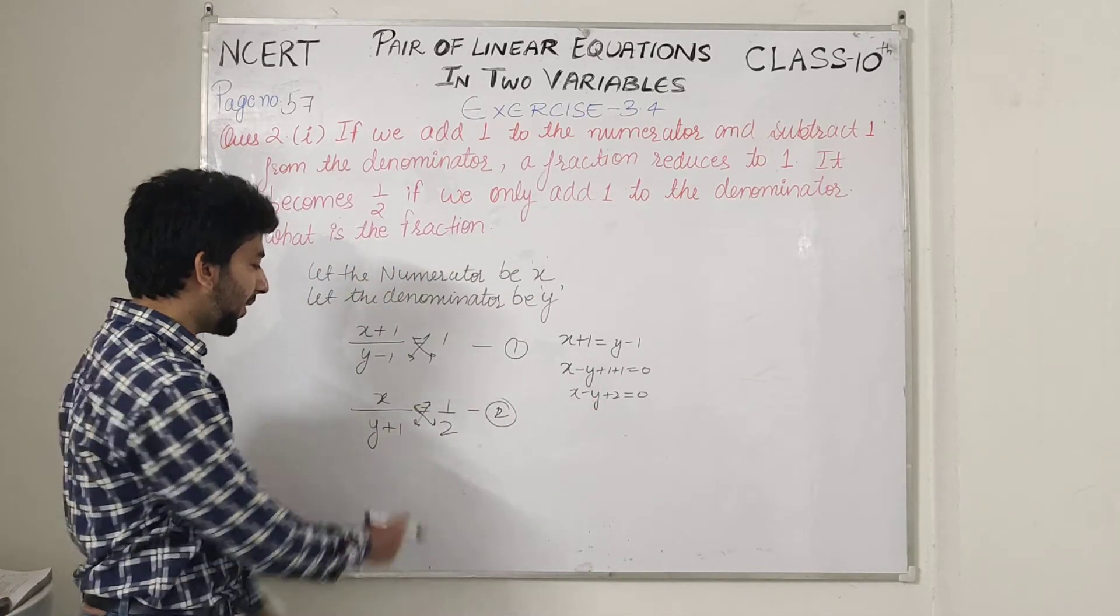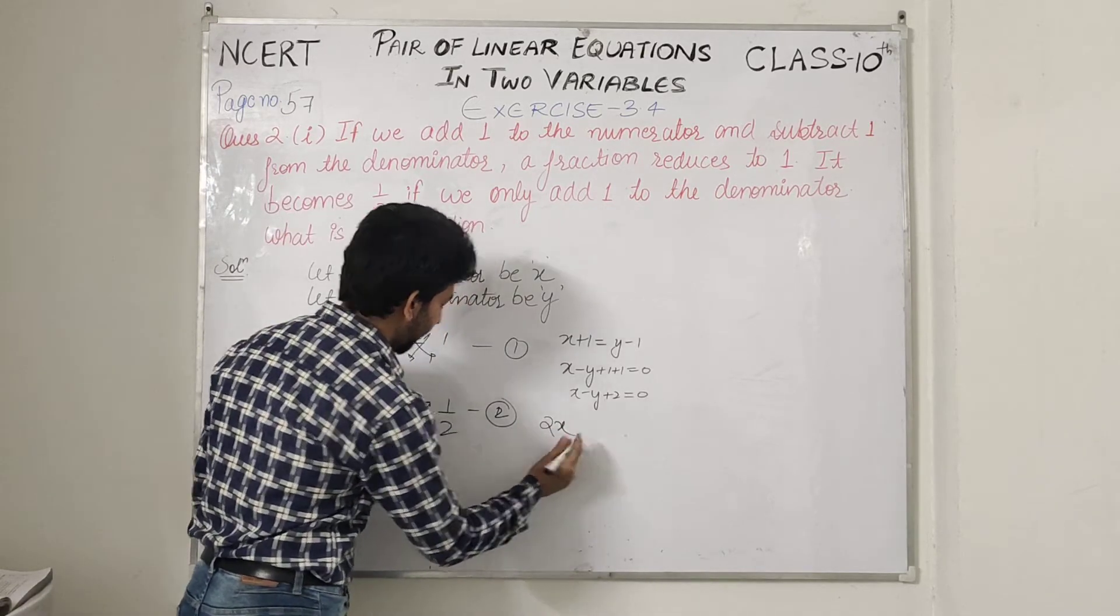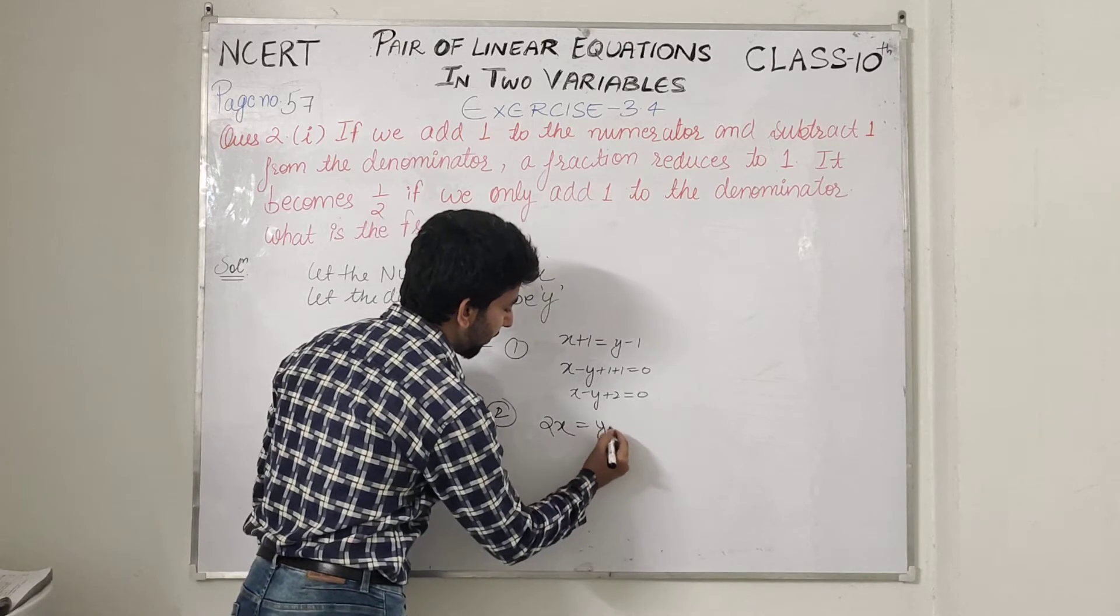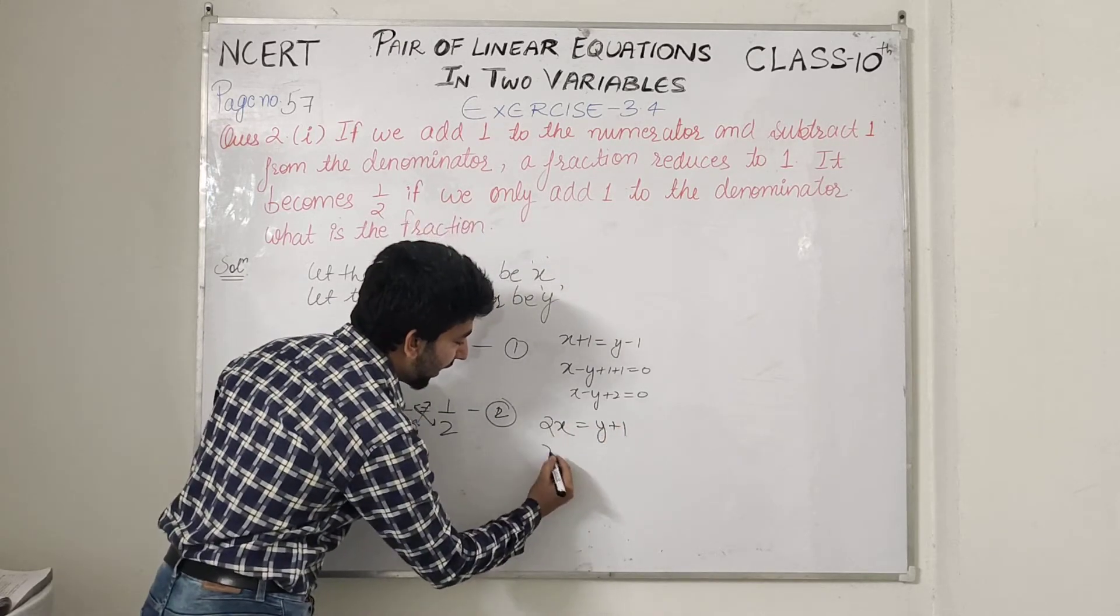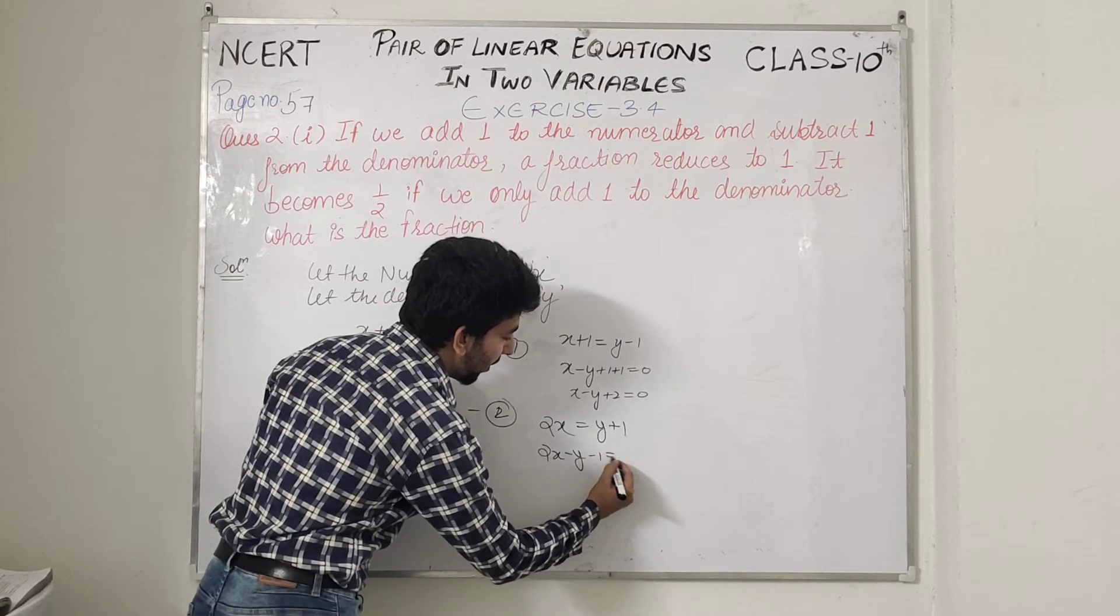And then for the second, we have to cross multiply. So 2x equals y plus 1. Left side 2x minus y minus 1 equals 0.